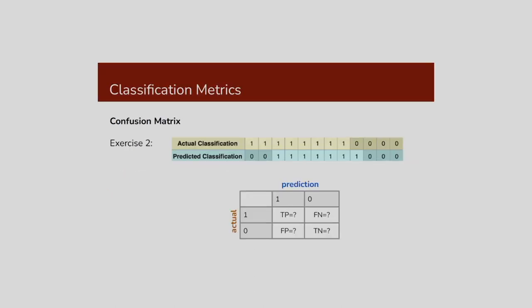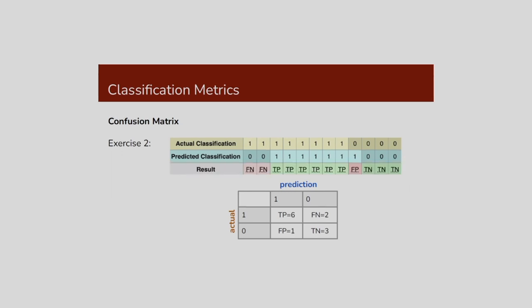Consider another example. The actual classification is 1, 1, 1, 1, 1, 1, 1 and 0, 0, 0. The predicted classification is 0, 0, 1, 1, 1, 1, 1, 1, 1, 0, 0, 0. Corresponding to actual class 1, the predicted class is 0 — that is false negative, because the actual class is 1 and the predicted class is 0. The second column is also false negative — actual class is 1, predicted class is 0.